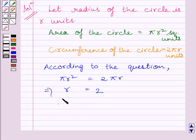So, we get radius of the circle is equal to 2 units.